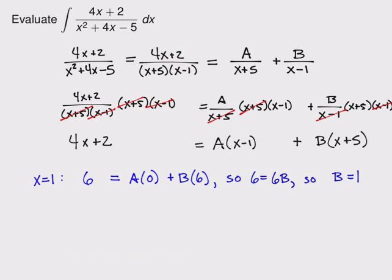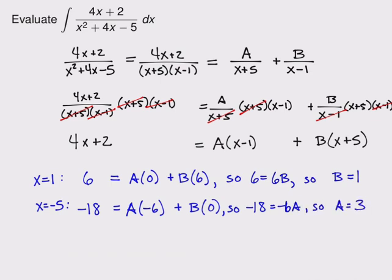I want to make the B term disappear. So I'm going to choose x equals minus 5, which will turn that term into 0. When I plug in minus 5, the left-hand side becomes minus 18. The A term gets a minus 6 coefficient, and the B term gets a 0. So I have minus 18 equals minus 6A, and so A is 3. Take a look back at that algebra and make sure you know why each of those steps happened.